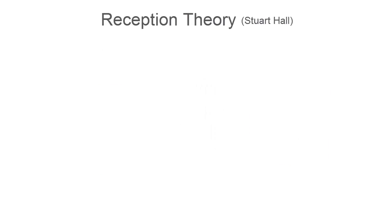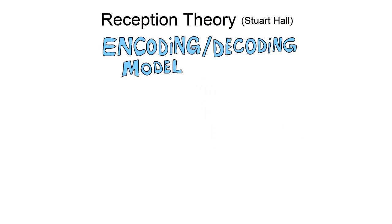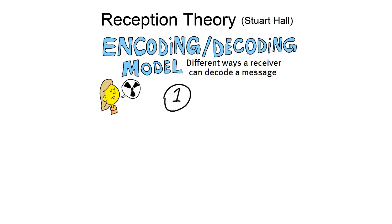To explain his views further, Hall came up with the encoding-decoding model, in which he explains the different ways a receiver can decode a message. Let's say Rose publishes a brochure. Rose is a conservative politician and argues in her pamphlet for more use of nuclear energy, as an alternative for the use of fossil fuels. There is going to be an election on this, and Rose wants people to vote for her. The brochure is read by Jake.